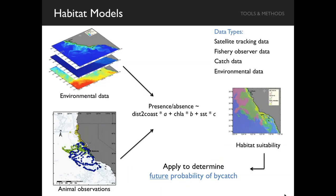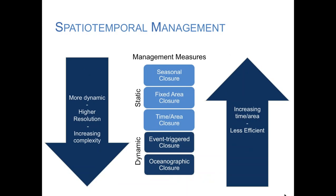We now have the tools to do this kind of work, as a result of advances in satellite tracking, remote sensing, and analytical techniques. This allows us to create mathematical models to understand why animals go where they do and predict that movement into the future. Dynamic management really doesn't need to be as complicated as I just described. The idea is that as we go to more dynamic management measures, we get higher resolution and increased management complexity, but we actually reduce the time and area required for closures, making it far more efficient.